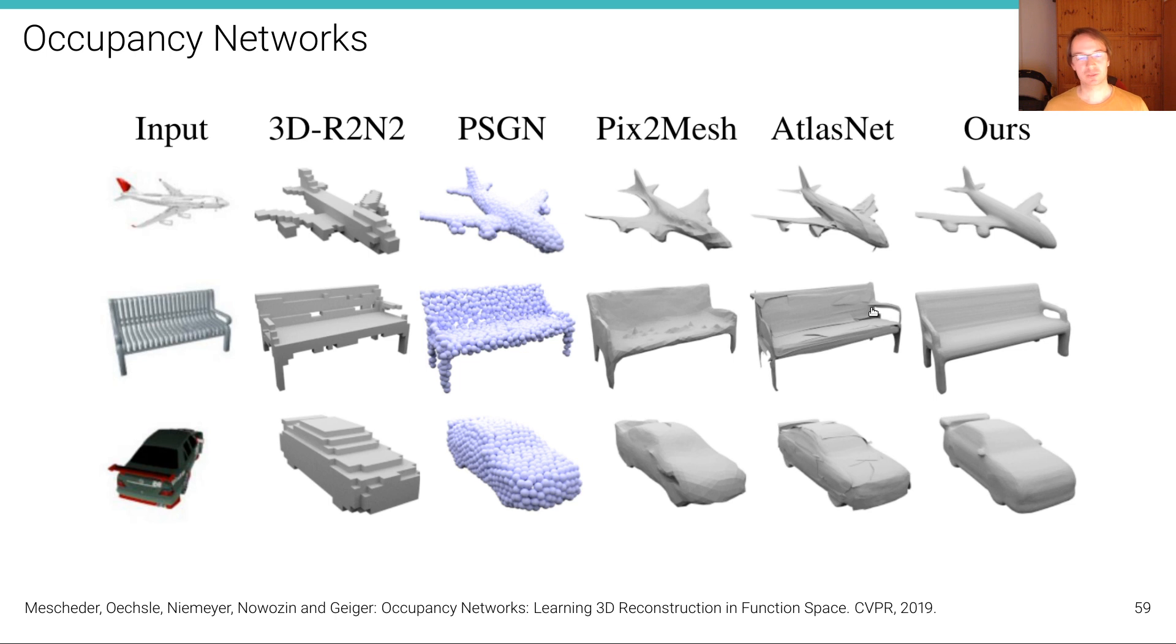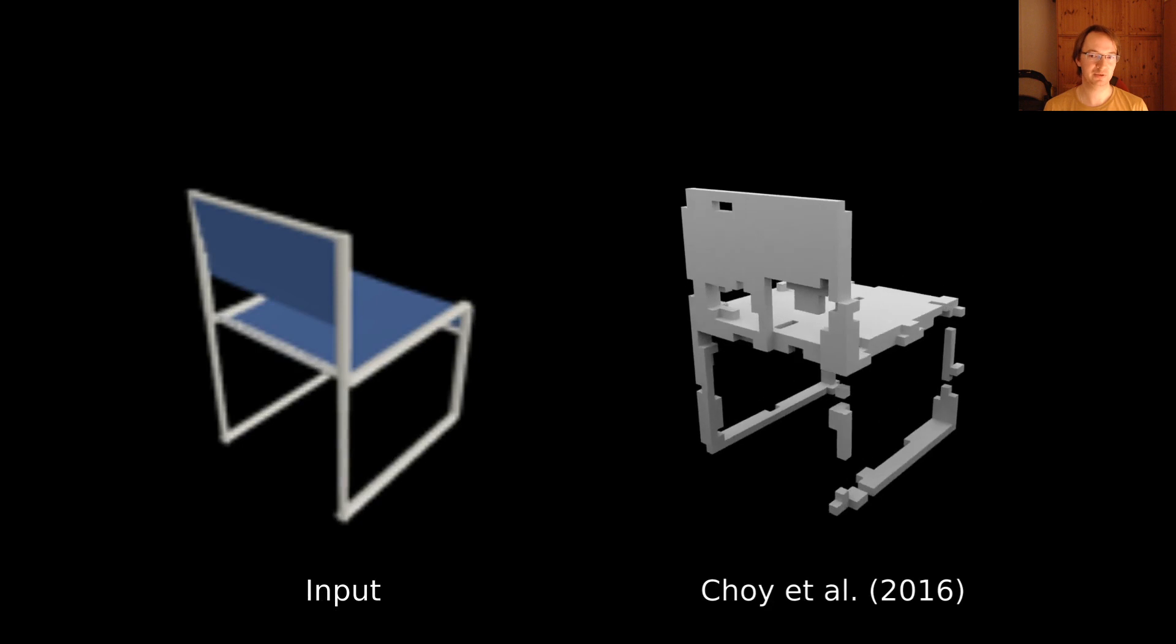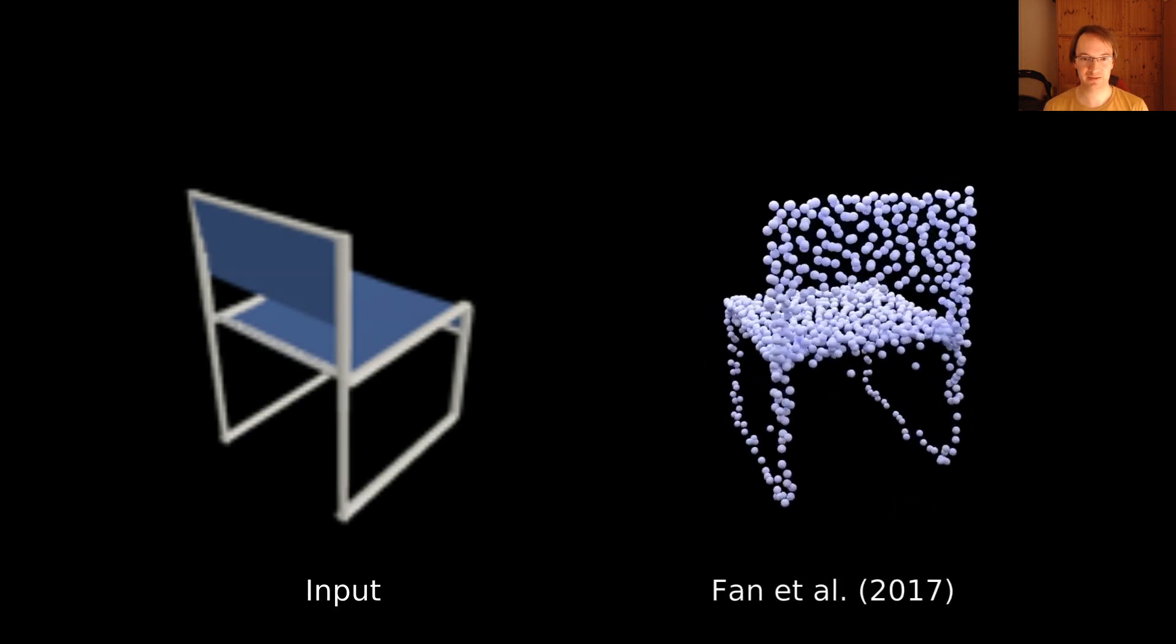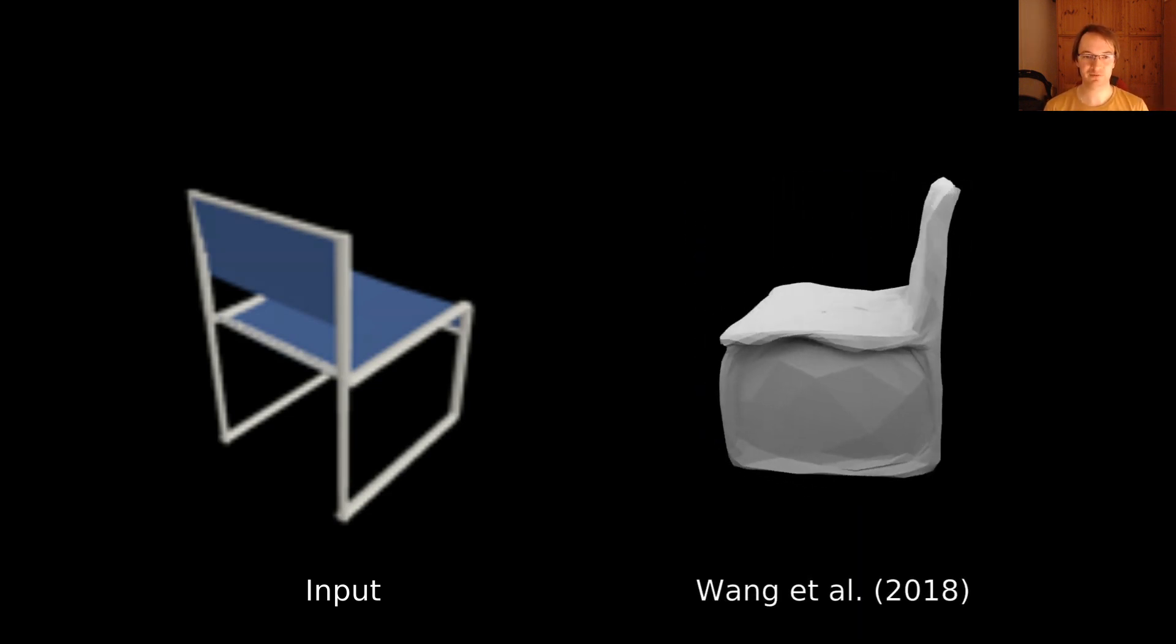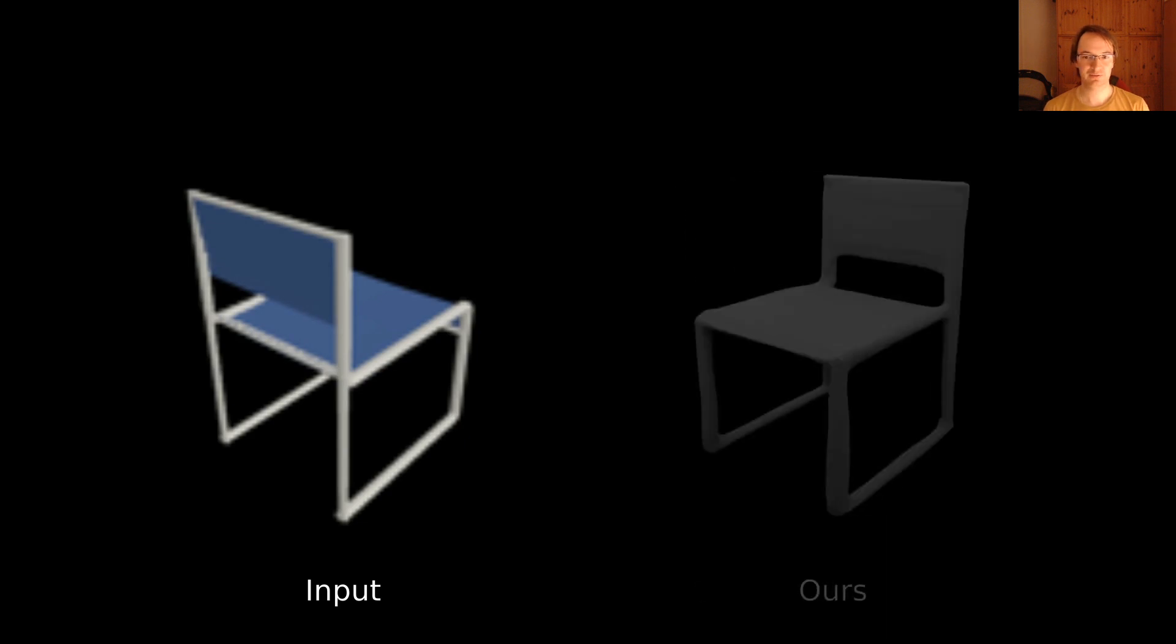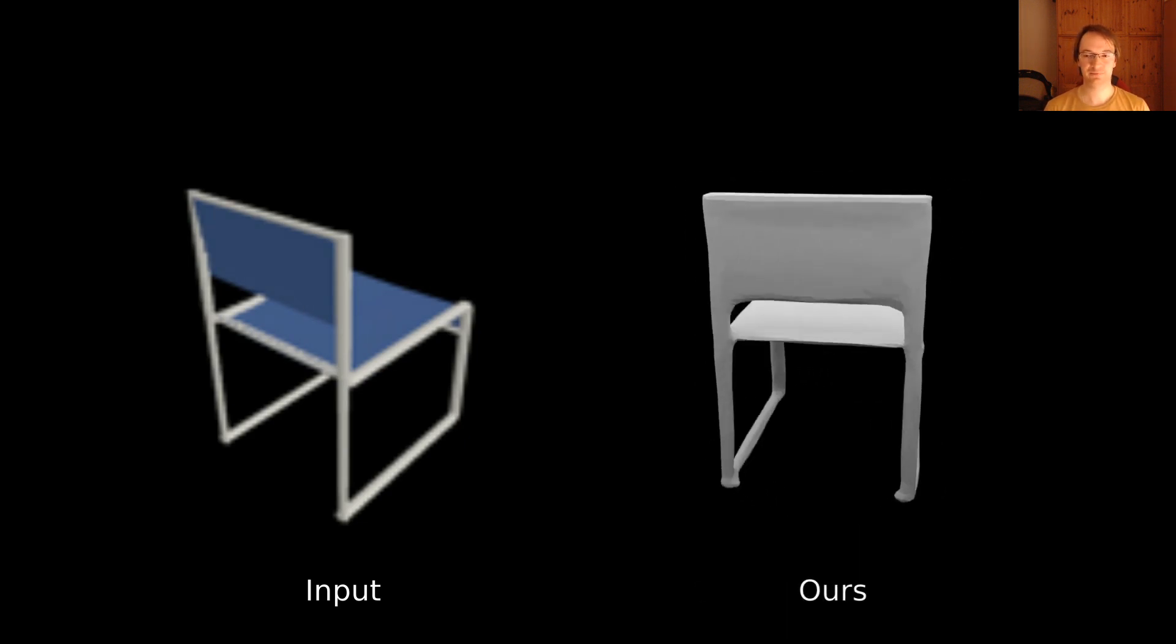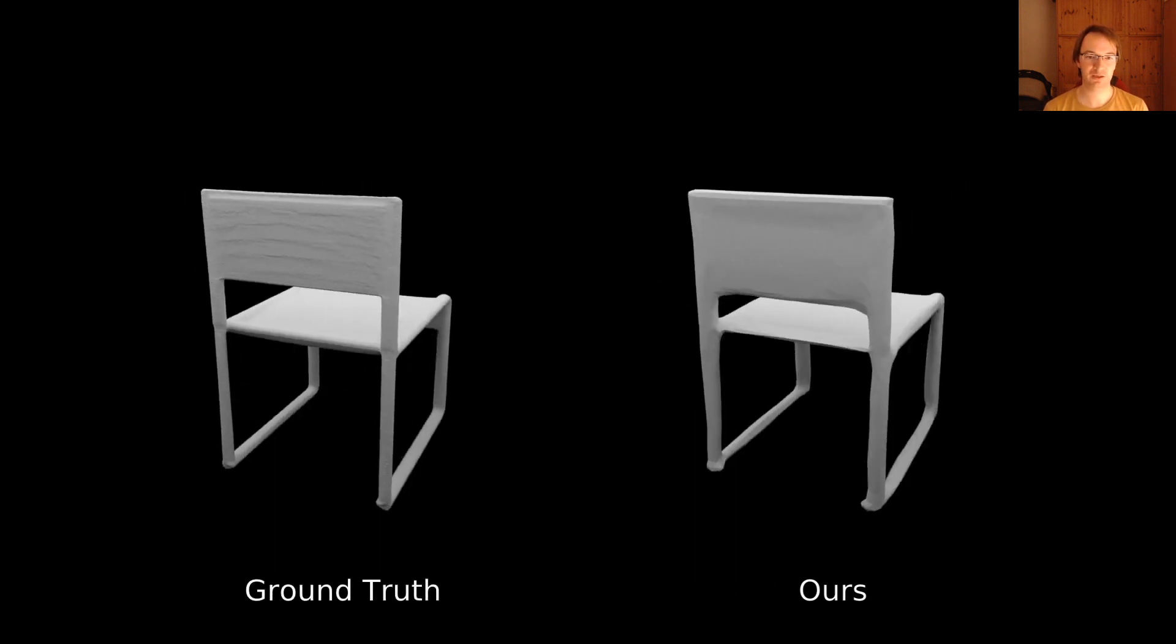And with this model, we can tackle a variety of tasks such as single image 3D reconstruction, as shown here with a couple of baseline methods. The input is on the left—it's just a 2D pixel matrix, a single image—and on the right you can see the reconstructions from that image. You can also see how detailed the reconstructions with this Occupancy Network are compared to the ground truth on the left.